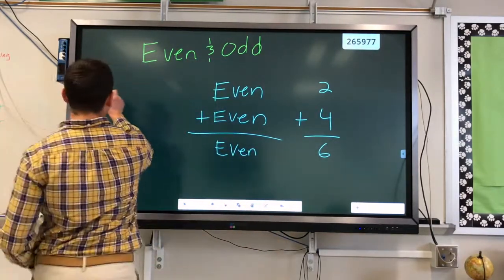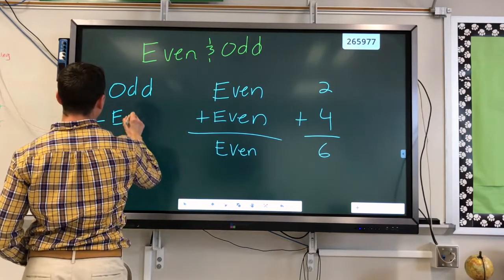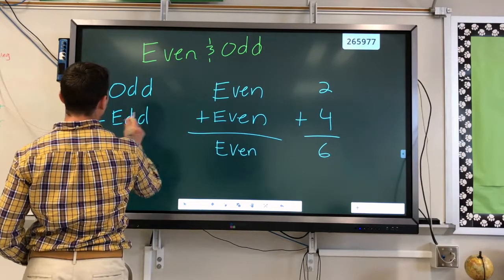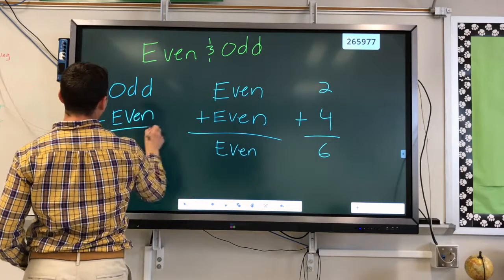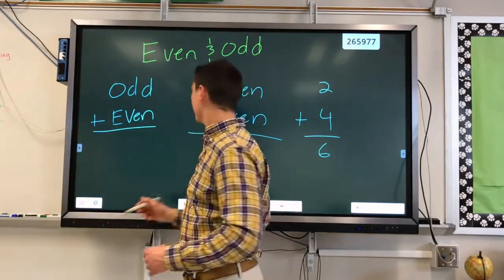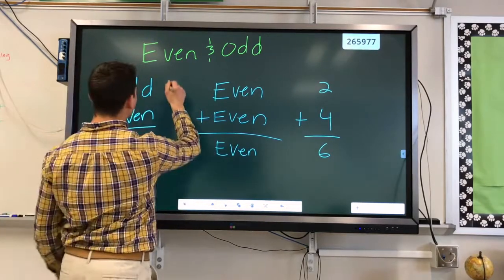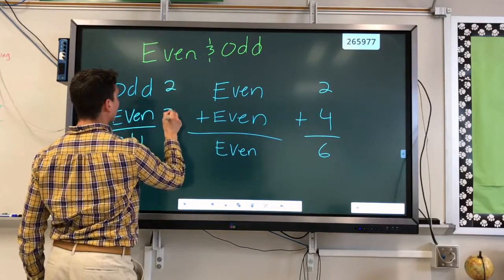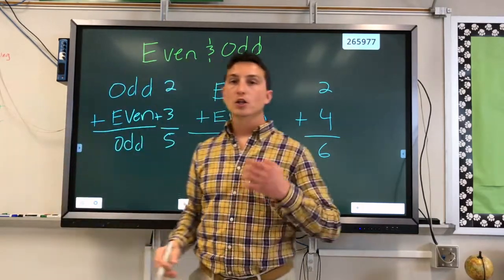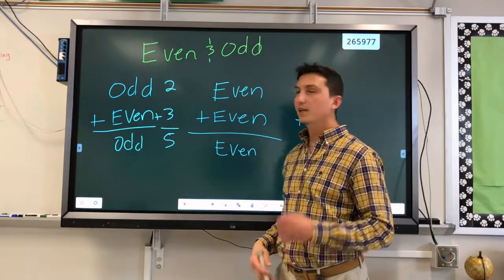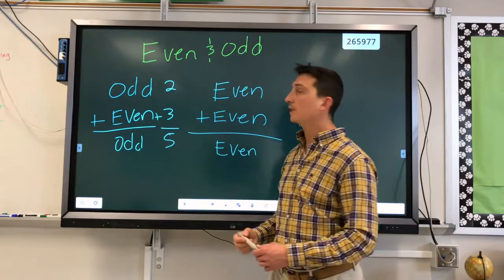An odd number plus an even number is always going to equal an odd number. Example, 2 plus 3 equals 5. 3 plus 4 equals 7. Odd number plus an even number is always going to be an odd number.